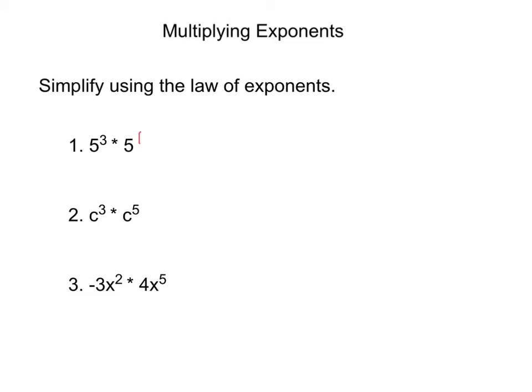If I were to write this out, 5 to the third power would look like 5 times 5 times 5. Then we're multiplying by 5 to the first, so that would just be one 5. So four fives would equal 5 to the fourth power, and that would be simplified.